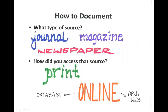No matter the style, you've got to start with two basic questions to know how to document a source. First, what type of source is it? Is it a book, a journal, a magazine, or a newspaper? Those are the four big types. Secondly, you have to know how you accessed that source. Did you find it in print — the original paper copy — or did you find it electronically online? And when you're online, remember there are two important ways: one is the closed internet, like subscription databases through the library; the second is the open web, like a Google or Yahoo search. Each has an impact on how you would document that source.